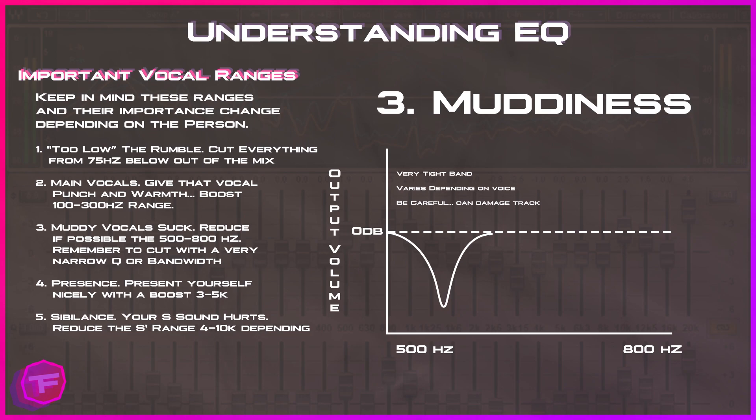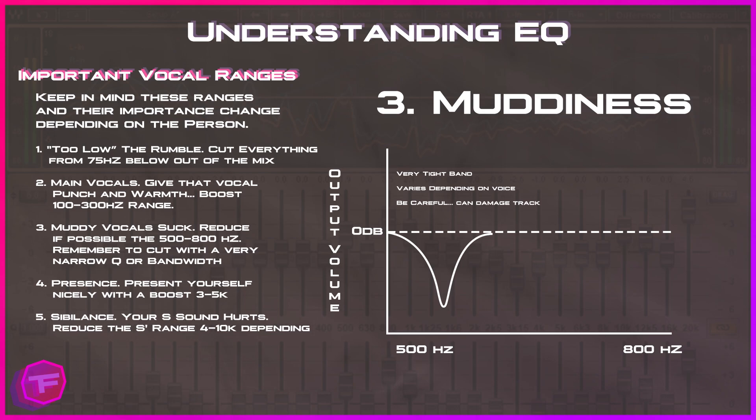Step three is removing that muddiness. A lot of this can be prevented by not over-boosting the punch and warmth areas. But if you have muddiness in your vocals, do a cut with a very tight EQ band in the 500 to 800 Hz range. I personally use a band that stretches from about 500 to 1000 Hz and cut just a few decibels to help remove the nasally and muddy sounds. Keep that bandwidth fairly tight, and only reduce by one to two decibels — not a heavy cut.